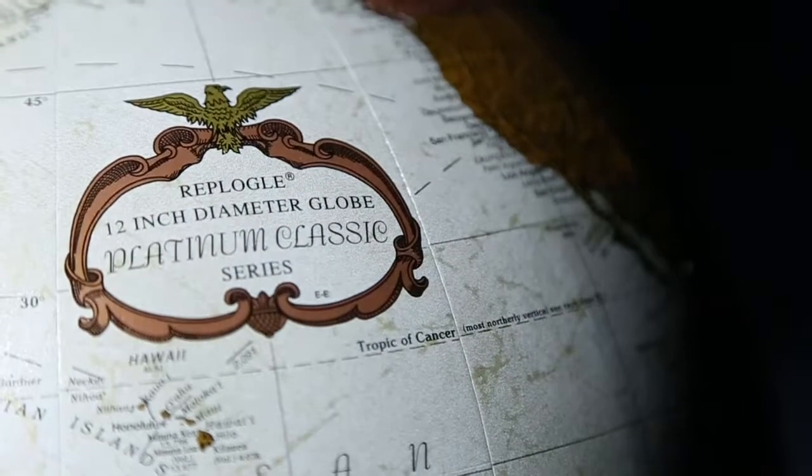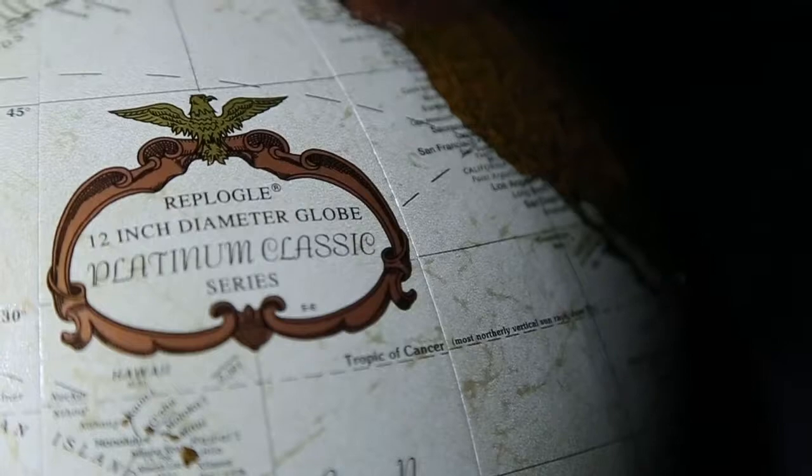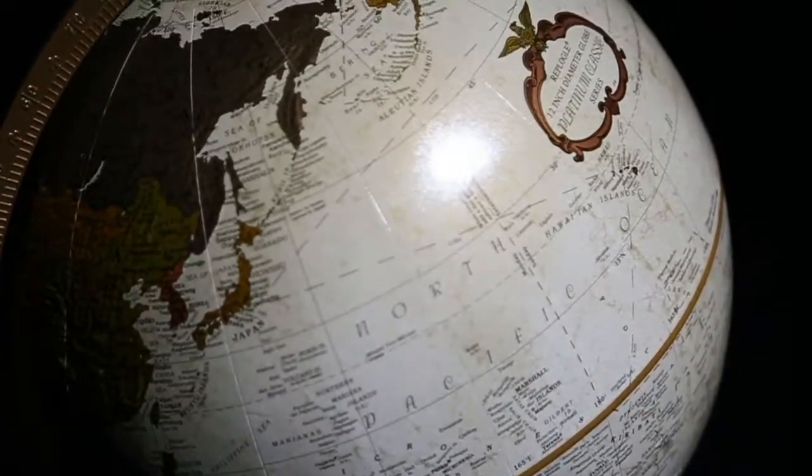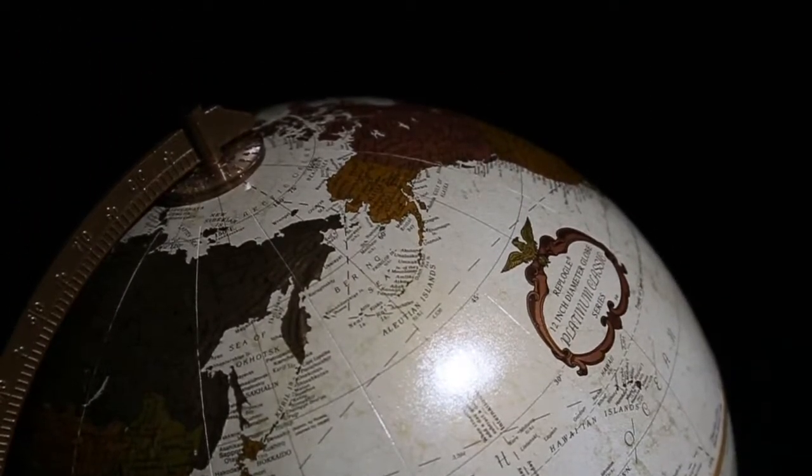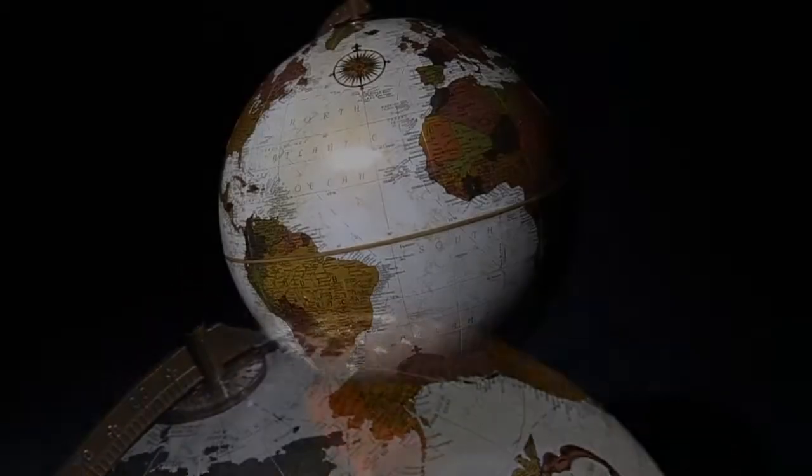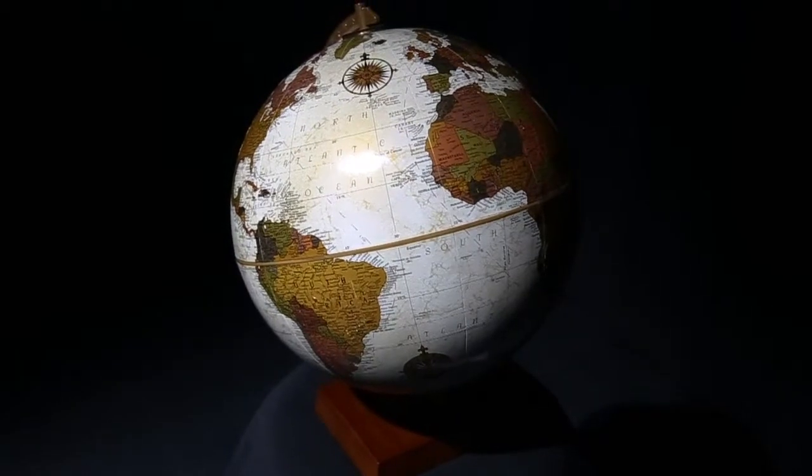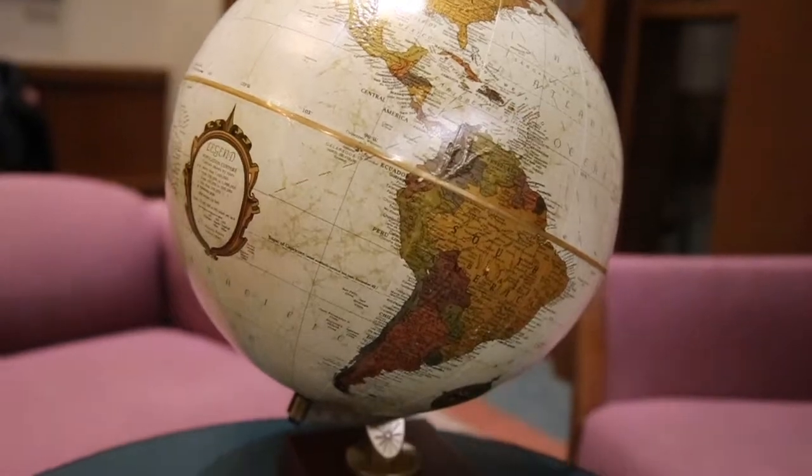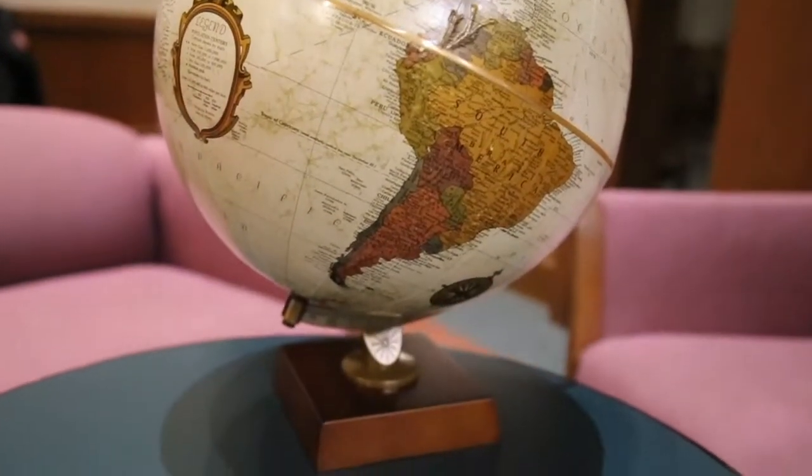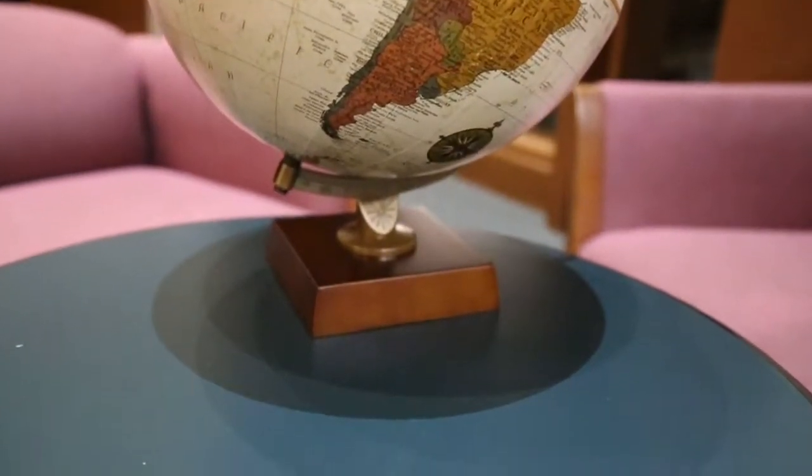Let's take a look at the Northwoods Desk Globe from Replogle Globes. This enduring and classic piece stands nearly 16 inches tall with a 12-inch diameter globe ball, which is mounted atop a rich walnut-colored base.